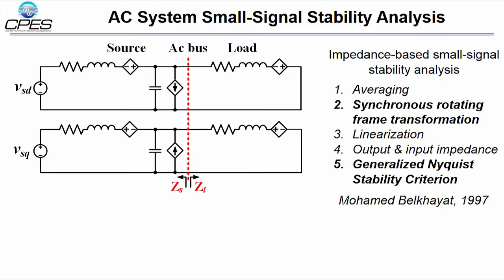Impedance of three-phase AC converters in DQ frame is a 2x2 matrix. Generalized Nyquist stability criteria should be applied to the impedance ratio in DQ frame.